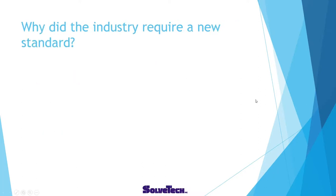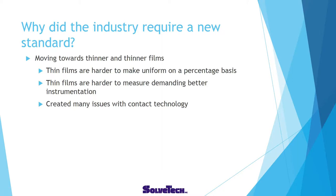Why did the industry require a new standard? The industry is moving towards thinner and thinner films — this might be called down gauging or gauge optimization. Thin films are harder to make uniform on a percentage basis, they're harder to measure, and they demand better instrumentation. This also created many issues with contact technology because of its limitations when it came to thin materials.